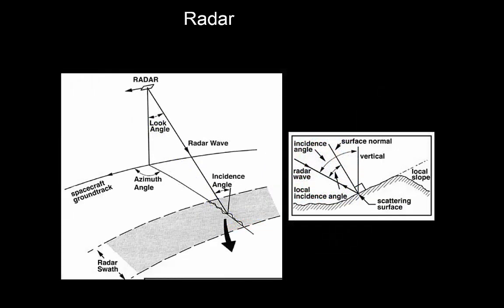A little bit on the geometry of radar. We talked about the look angle — the angle here. We talked about the incidence angle, which is the complement of that — the angle between the surface and the emitted pulse. The radar swath is basically the width of the area over which it is measuring, similar to optical remote sensing. As you can see, it doesn't measure straight under the satellite — it only measures at an angle. This diagram shows some of those terms in cross-section.